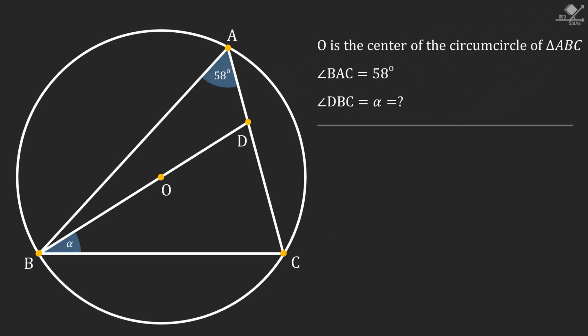In this video, we have an Olympiad question from 1995 Turkish Olympiads. Point O is the center of the circumcircle of triangle ABC. Angle BAC is 58 degrees, and we are asked to find the angle alpha.